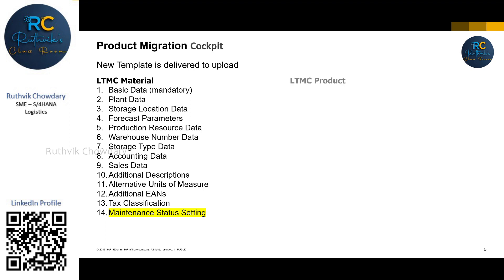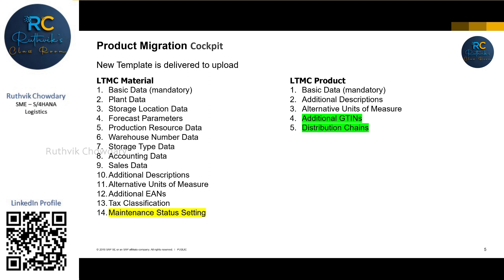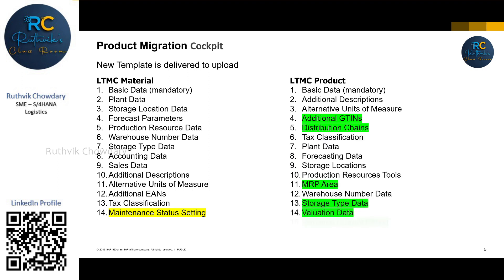Now in the new migration cockpit product template, the same old fields are carried forward, but with a little bit of sheet realignment and a more detailed view. All the existing sheets remain, but the ones highlighted in green are new sheets introduced in the product template. Previously, additional description and alternate unit of measurement were also available but have now been rearranged to the front. Planned data has been moved to the seventh sheet.